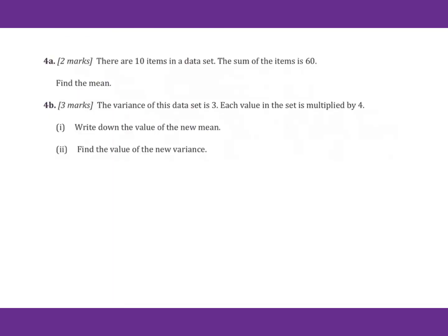For problem 4a, there are 10 items in a data set. Sum of the items is 60. So 60 divided by 10 equals 6, that's the mean. The variance of this data set is 3, which means this equals 3. Each value in the set is multiplied by 4. Write down the value of new mean. The new mean equals the old mean 6 multiplied by 4, that's 24.